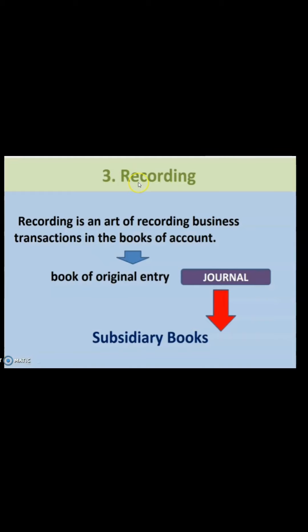The third attribute is recording. Once you have identified and measured a transaction in some unit, now you have to record the same. The first entry of any transaction is made in the book of original entry, which is also known as the journal. Remember — which is the book of original entry? It is the journal. So whenever a transaction is entered for the first time, we make the entry in the journal book.